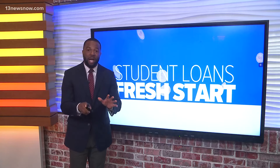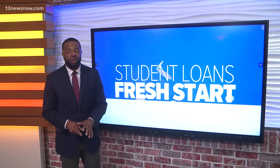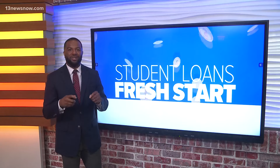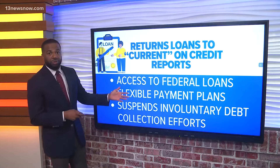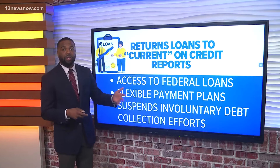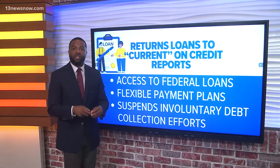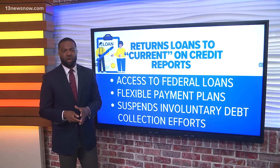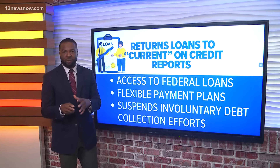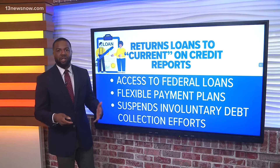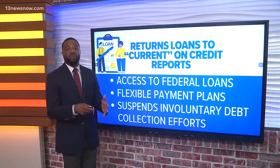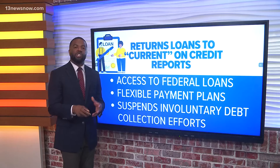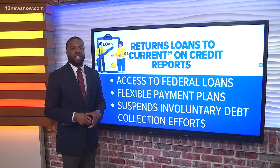If you've defaulted on your federal student loans, listen up. The government has introduced a new program that can help get you back into good standing. The Fresh Start program returns your student loans to current status on credit reports and gets rid of negative default marks. It gives borrowers access to federal student aid and other government loans like mortgages, as well as access to flexible repayment plans. And it also suspends involuntary debt collection efforts.